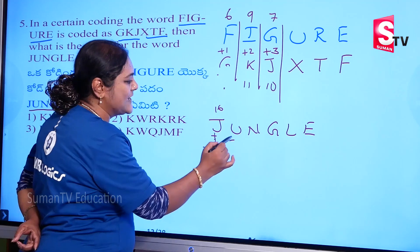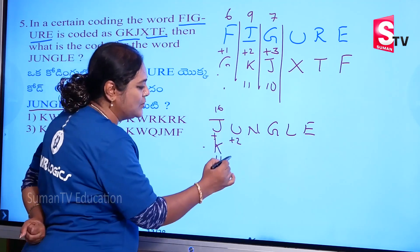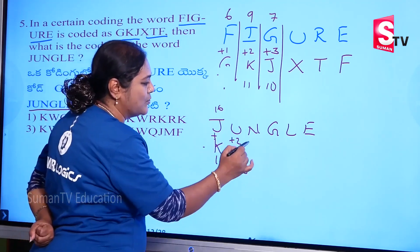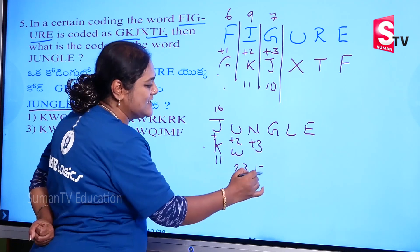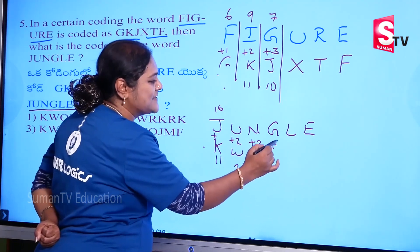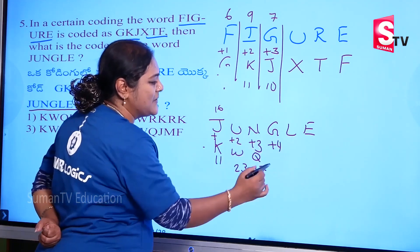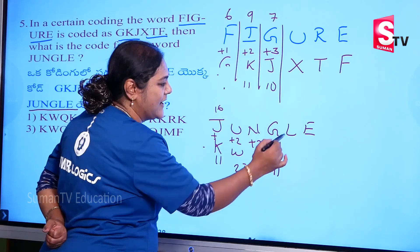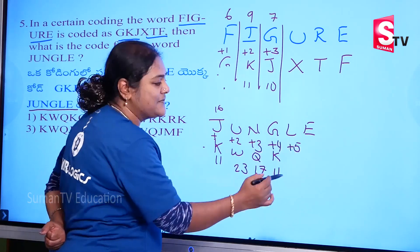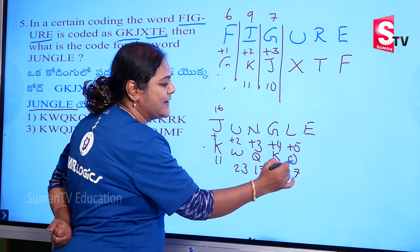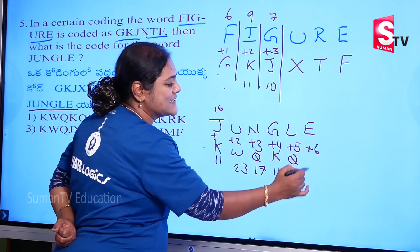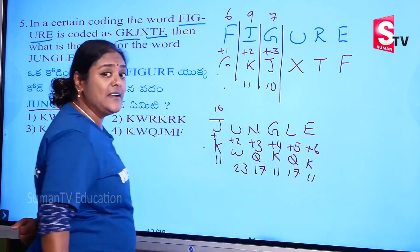Next in T, plus 2: 21 plus 2 equals 23. And W, plus 3: 14 plus 3 equals 17. Q, plus 4: 7 plus 4 equals 11. And K, then plus 5: 12 plus 5 equals 17. And Q, then plus 5 plus 6 equals 11. And K.